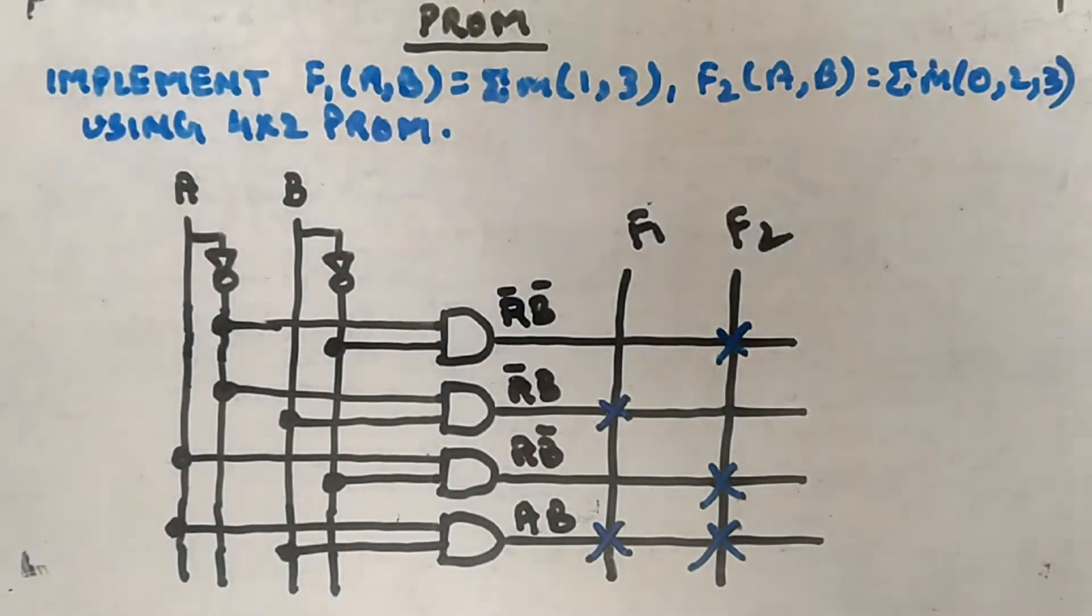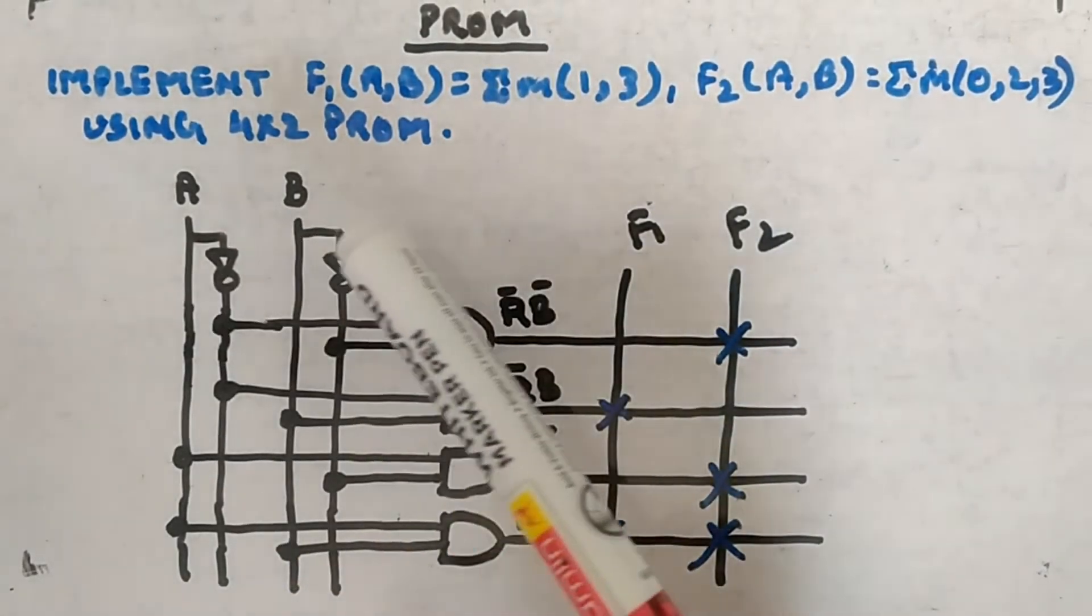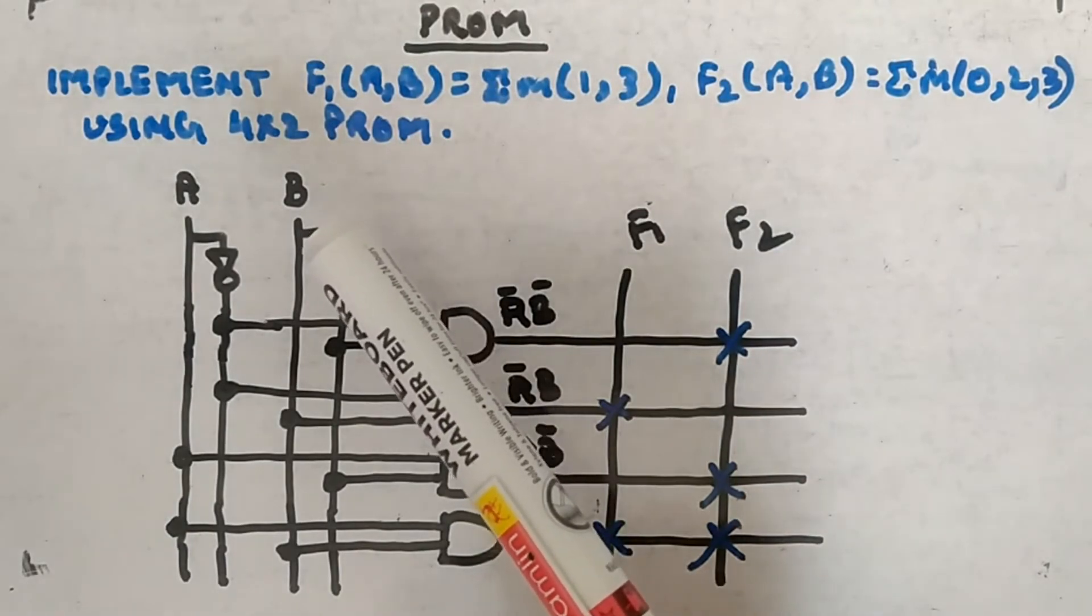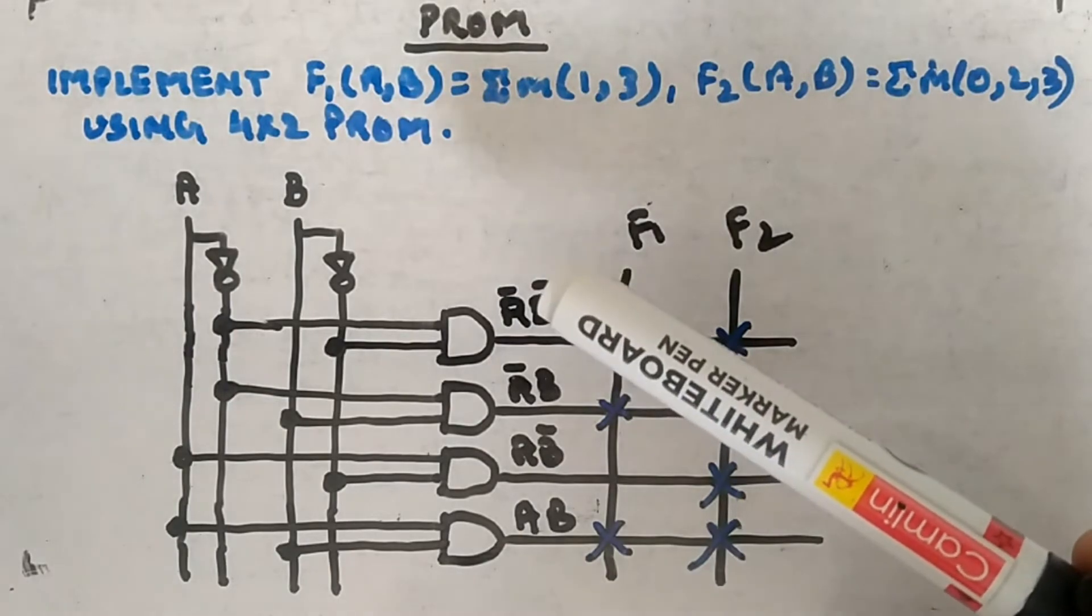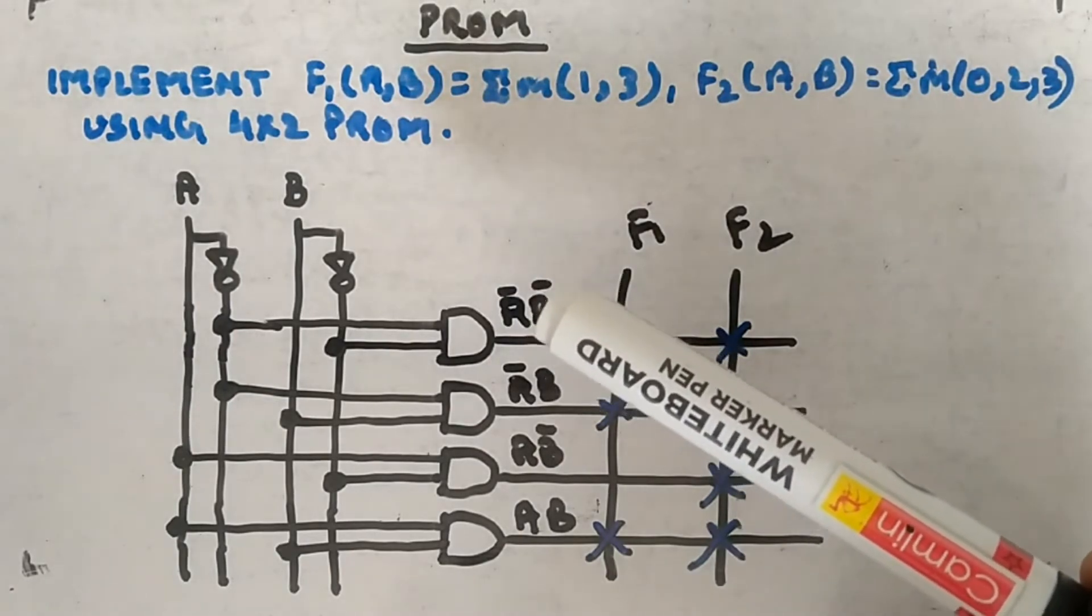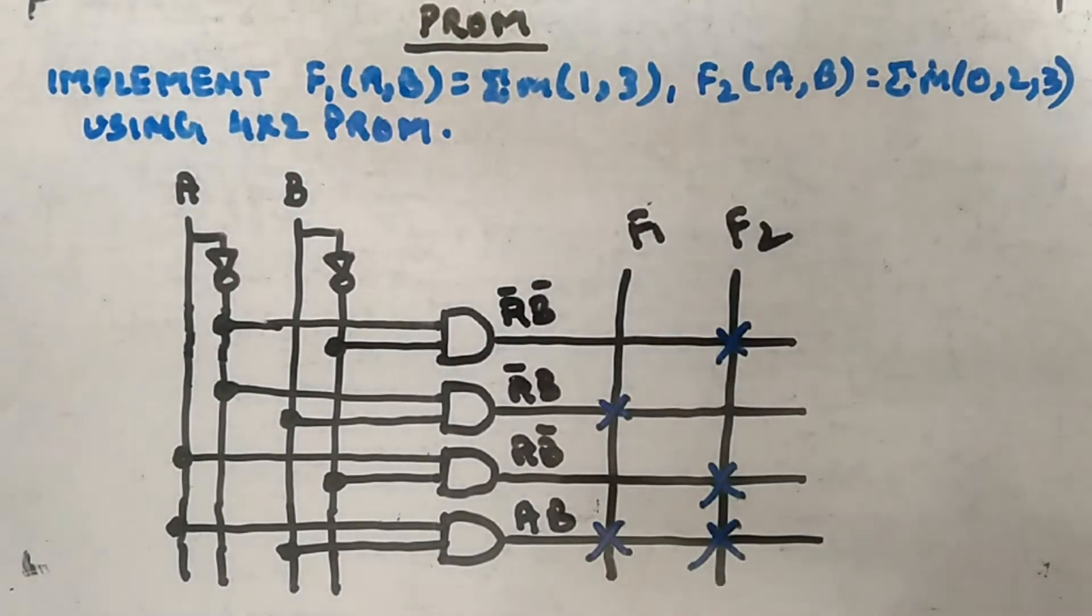I've not given a four-variable example because it gets too heavy, it looks very big. That's one of the problems: as you increase the number of input variables, your minterms increase. In three variables also you saw it gets messy. Imagine four variables: you have to generate all the minterms whether it is required by your functions or not.